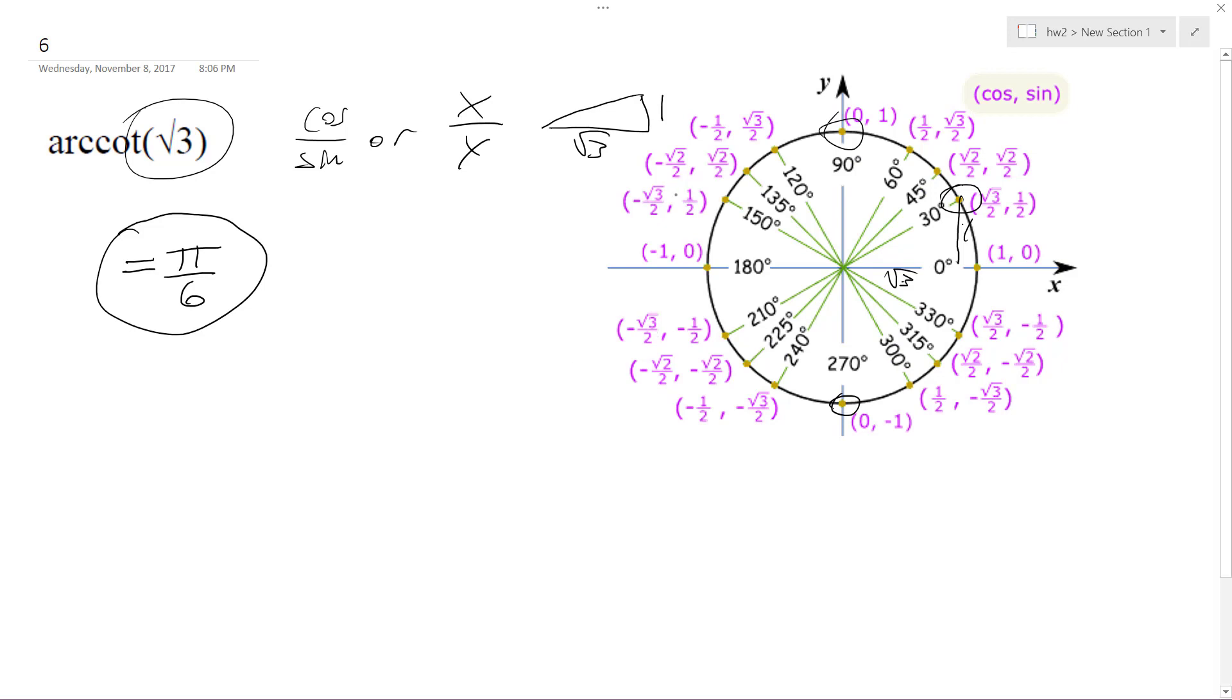Otherwise you could pick 210 or 7 pi over 6, but that's not a valid response. Hope that helps.